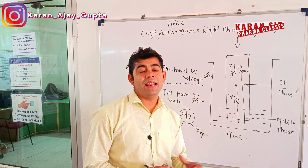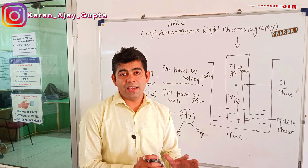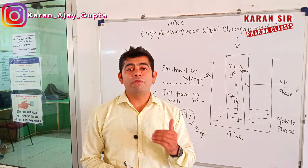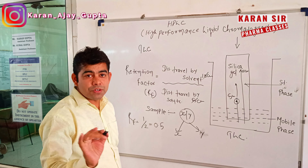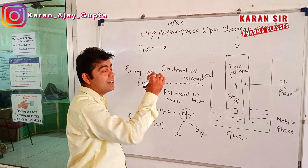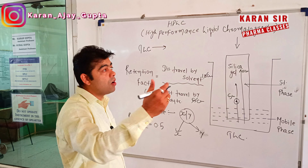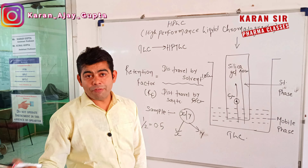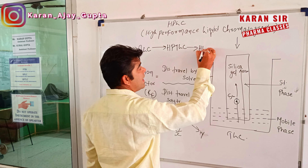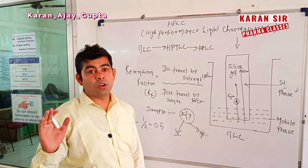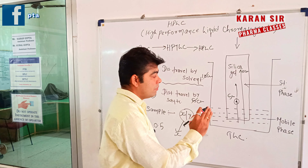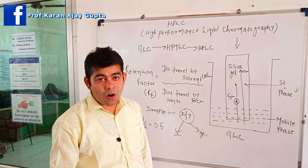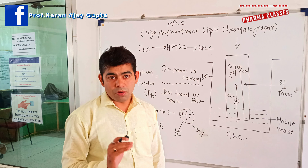This is called TLC — Thin Layer Chromatography — and with the help of TLC I have explained the principle of chromatography. HPLC is the modern form of TLC. First, TLC was introduced, then its more advanced form HPTLC — High Performance Thin Layer Chromatography — and then HPLC, High Performance Liquid Chromatography, was developed. HPLC is also called liquid-solid chromatography because it involves both a liquid phase and a solid phase.